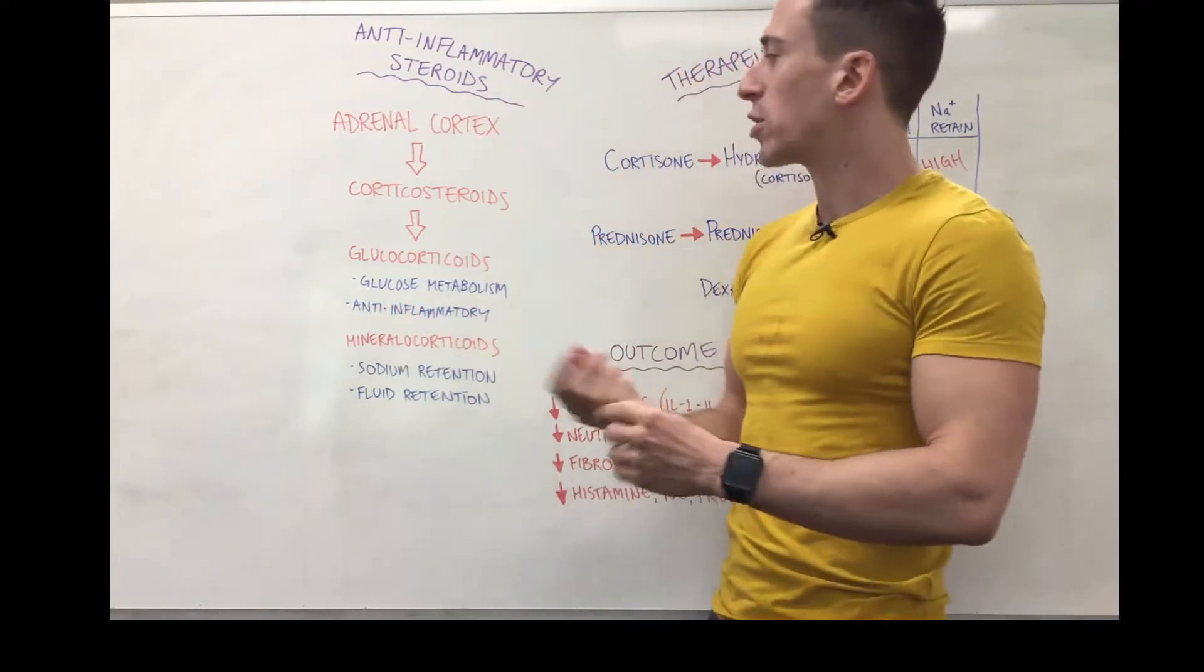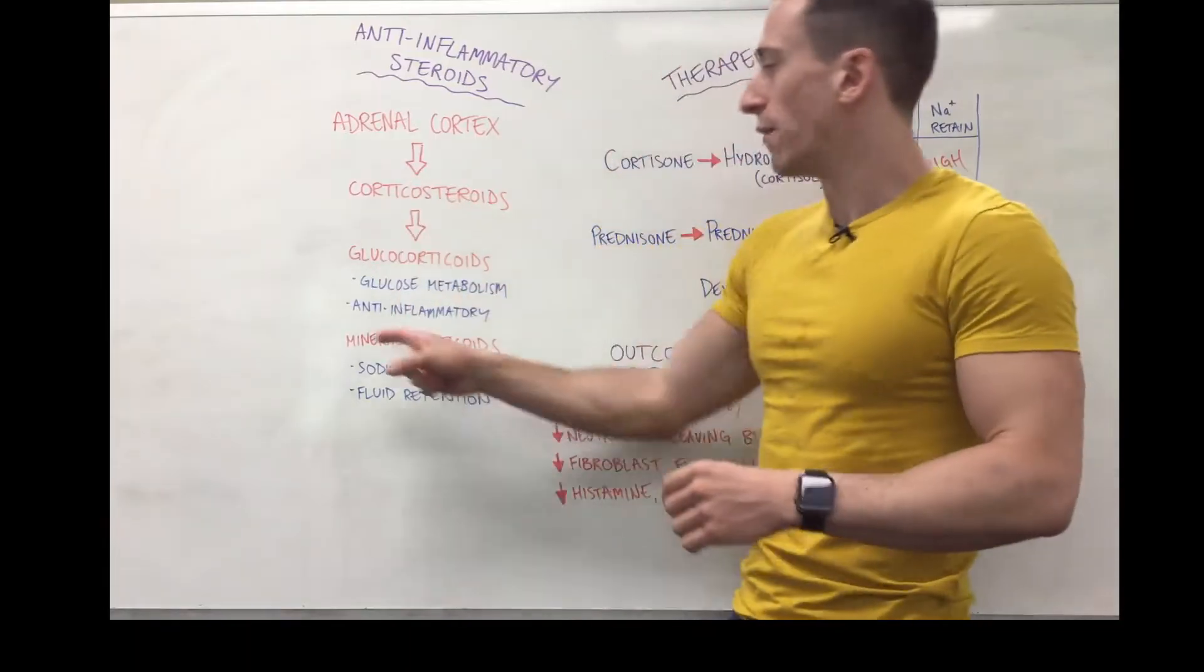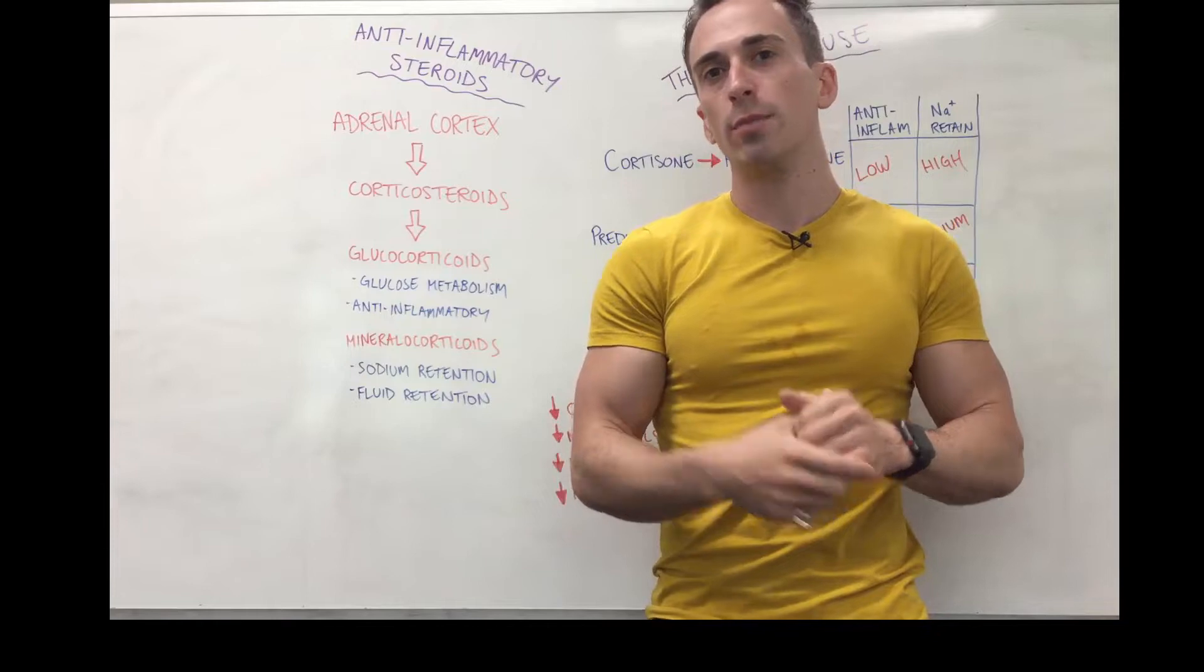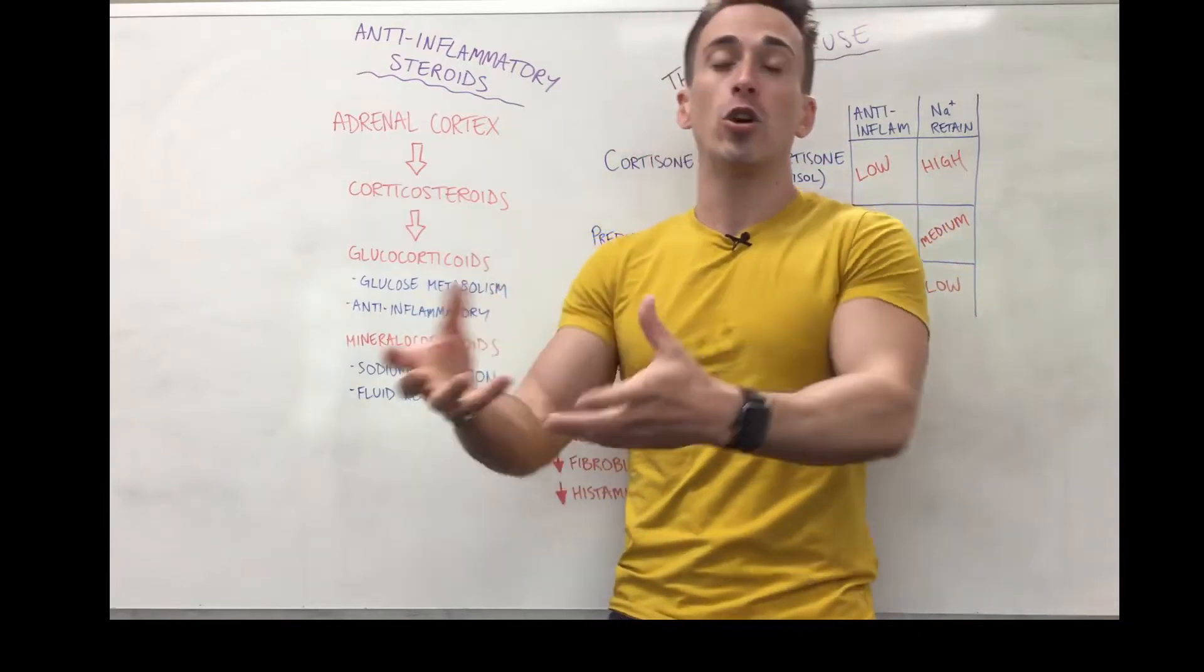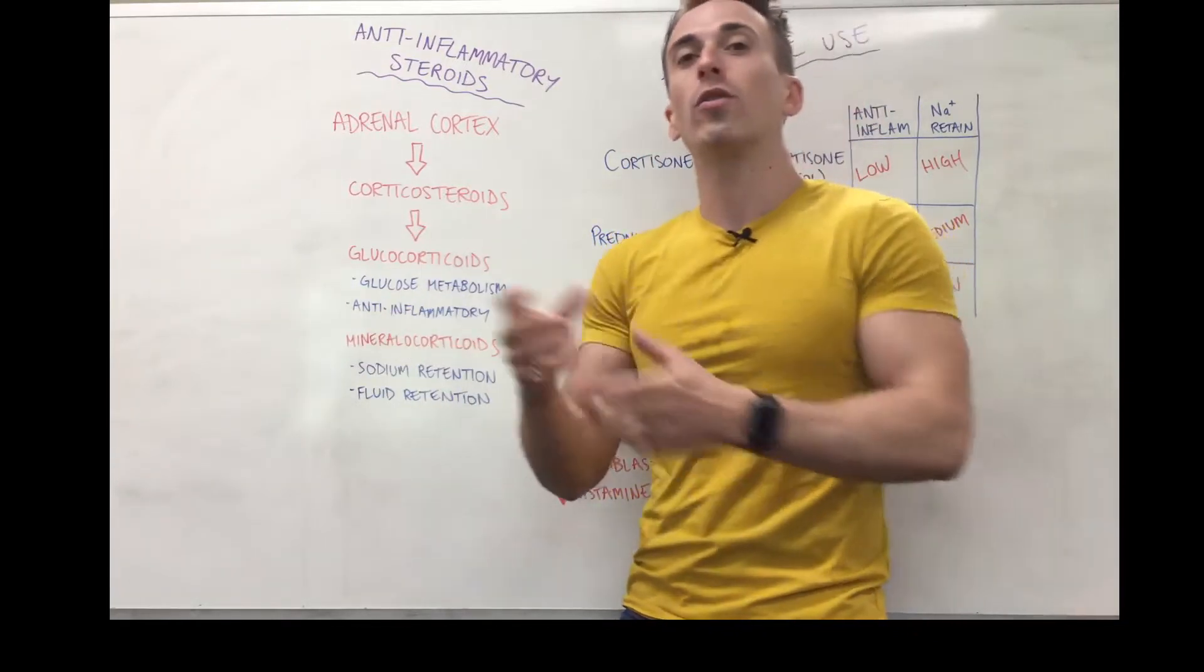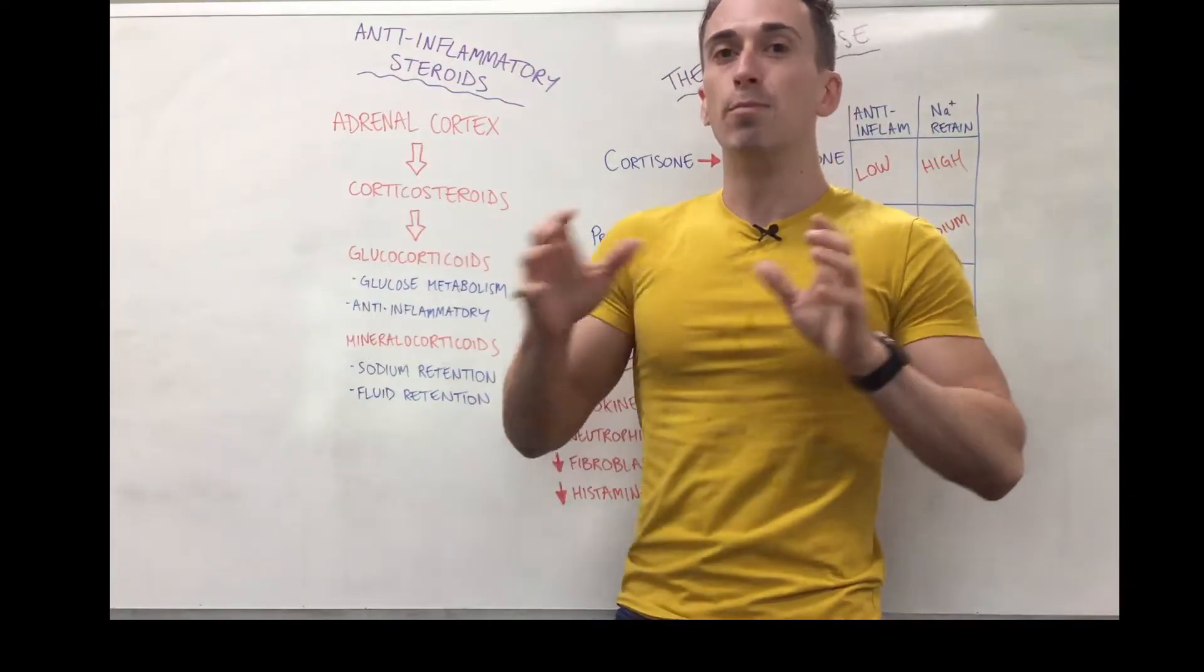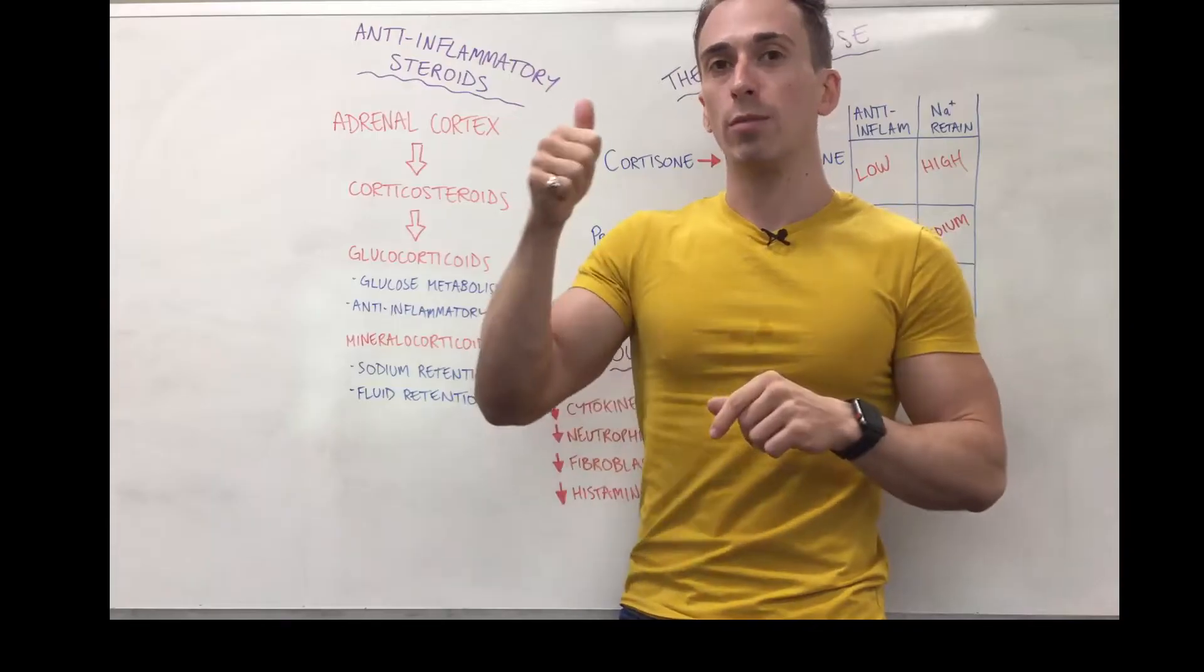The other type of corticosteroids we have are mineralocorticoids, and they're called mineralocorticoids because they play a role in sodium retention. You increase the amount of sodium that stays in your blood, you increase the amount of fluid in your blood because water follows sodium. This bulks up the blood volume and also bulks up the blood pressure.